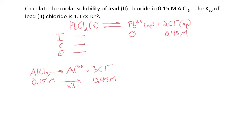Now the change will be the same. I'll have +S and +2S. At equilibrium, I have 0 + S = S. And for the chloride, I'll have 0.45 + 2S.